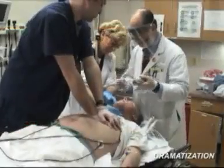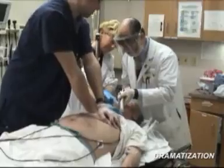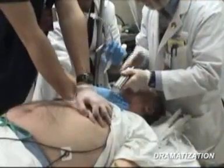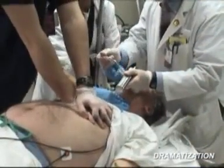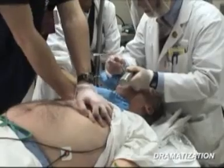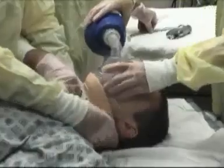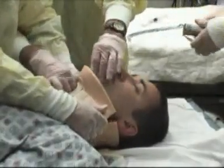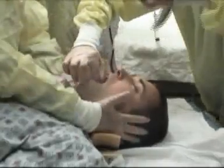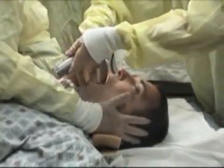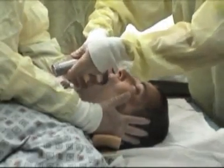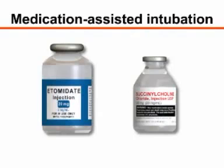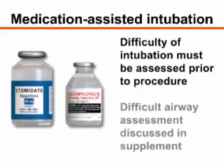In emergent cases, such as cardiac arrest, airway management is of paramount importance and there are very few contraindications to orotracheal intubation. Unstable cervical spine injury is not a contraindication, but intubation must be performed with strict in-line stabilization of the cervical spine. If neuromuscular blocking agents or sedatives are used to facilitate intubation, the difficulty of intubation must be assessed and planned for before proceeding.